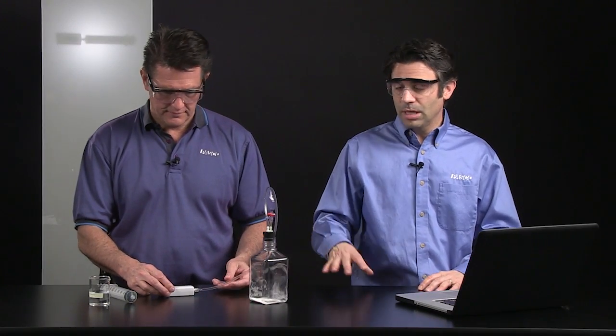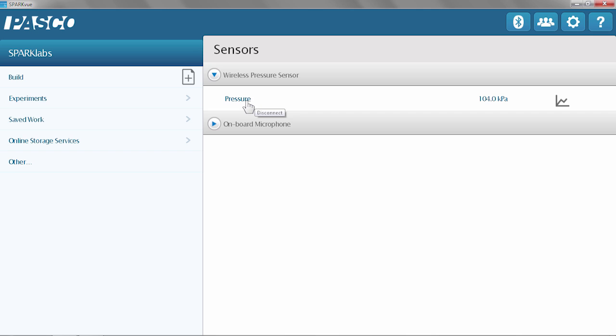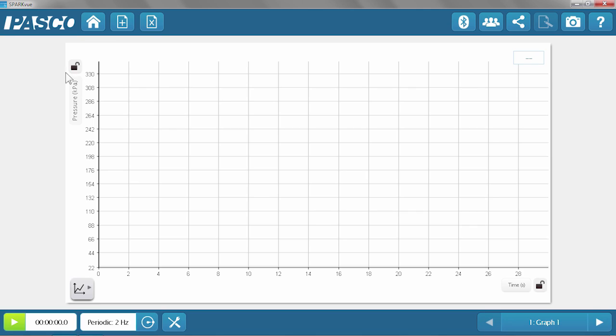And because I know what the experiment's going to be, I'm going to create the display right now. So I'm going to create a graph of pressure versus time to monitor the pressure as the reaction happens. I'm just going to touch on pressure. So I have my pressure and time in a graph, and we're all set to go.